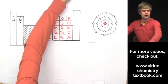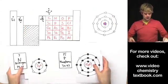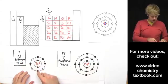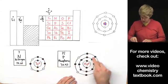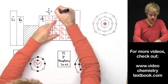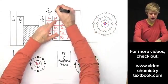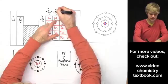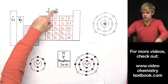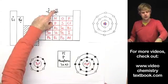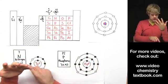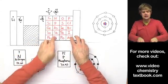Moving right, this column with nitrogen and phosphorus and others — everything here has five valence electrons. So for nitrogen's electron dot diagram, I put a dot on the top, bottom, left, and right, and then start doubling up — placing two dots on the top — to show five valence electrons for everything in this column.